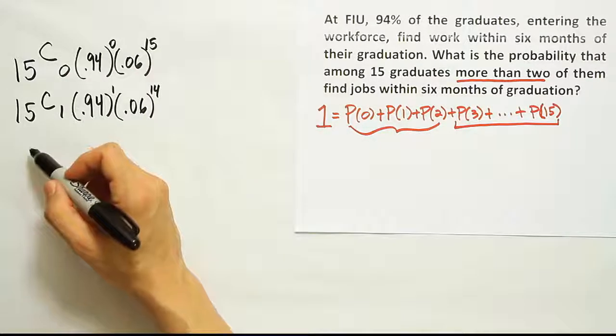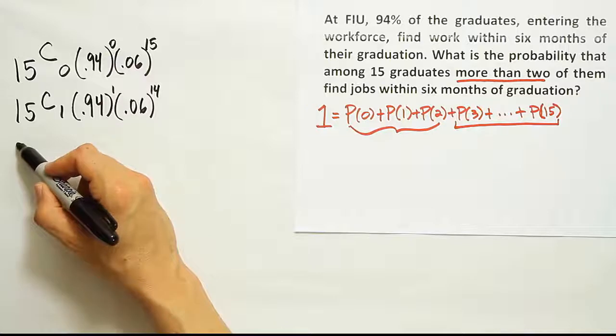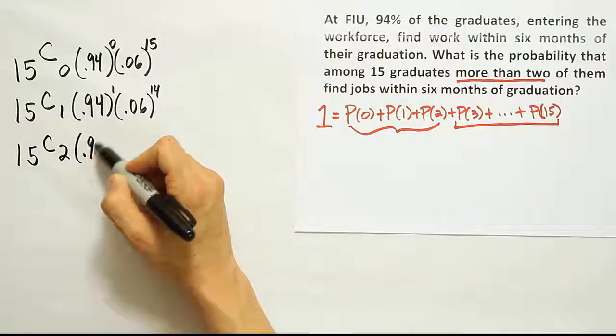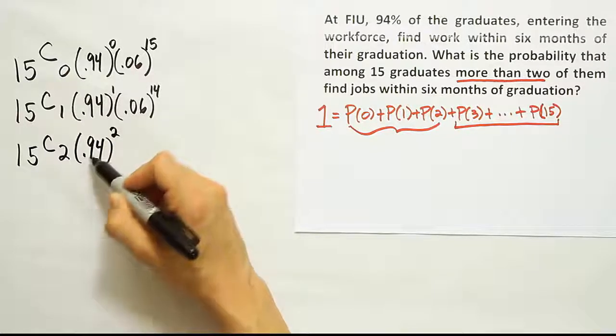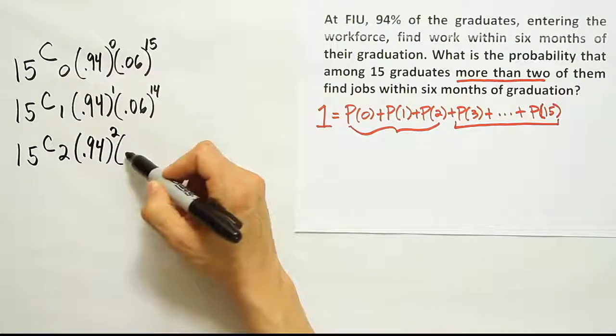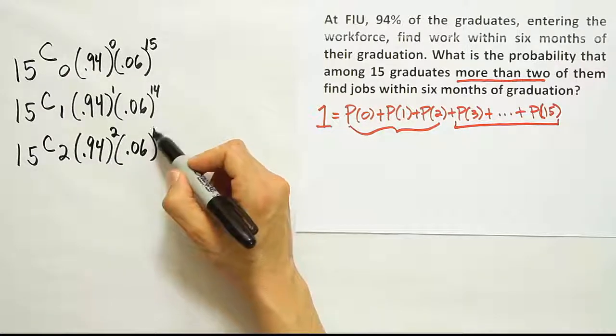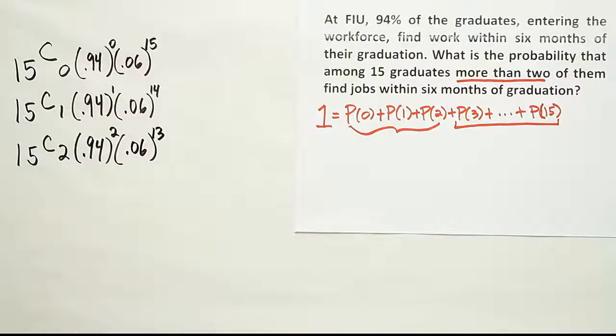And then we're going to do P(2), or the probability that x is equal to two. So we'll have 15 choose two. And now there'll be two people that have a job, so it'll be 0.94 to the second power. And then all the others will not find work. So from 15 take away two, we get 13. There'll be 13 people there.